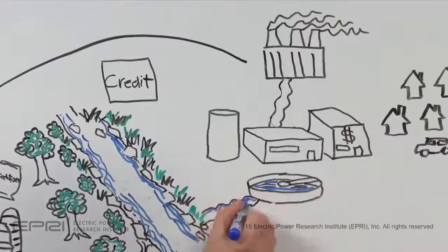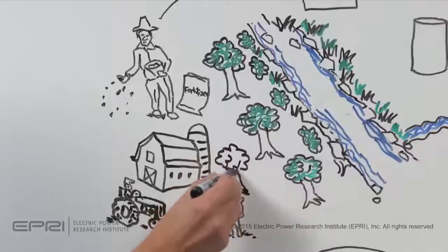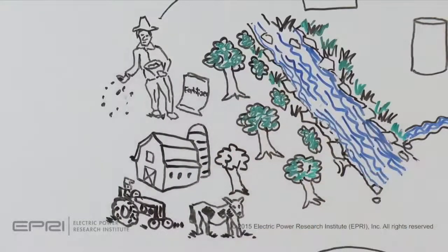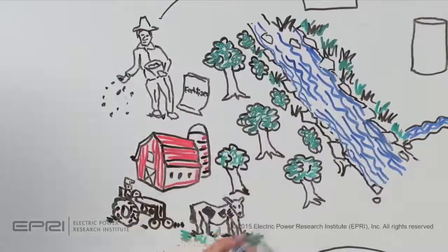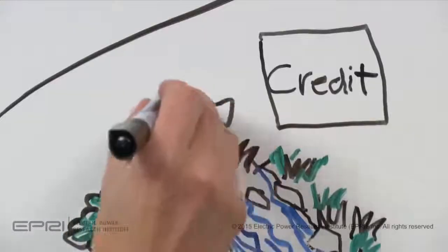The facility meets its permit at lower cost. The farmer gets paid to do better farming practices. And most important, the watershed receives something of value, cleaner water.